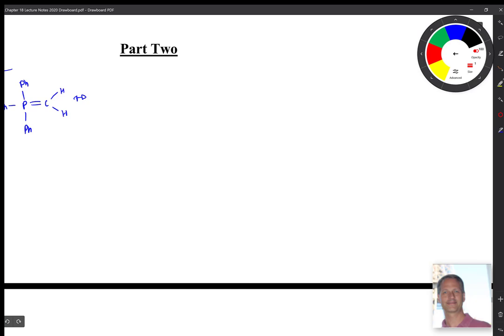Part two, we're going to start off with our ylide. What we want to do is take the form that has the negative charge on that carbon. We're going to draw the other resonance form of that.